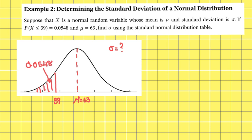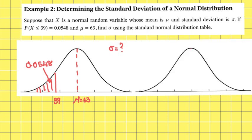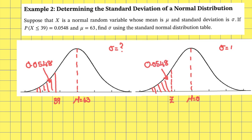Now I can do exactly the same for a standardized normal distribution curve. Putting on the relevant information: the mean is equal to zero, the standard deviation is equal to one, and I want to find the z-score with an area of 0.0548. I'm going to go to my TI-Nspire and do an inverse normal calculation. That gives me a z-score equal to minus 1.6.